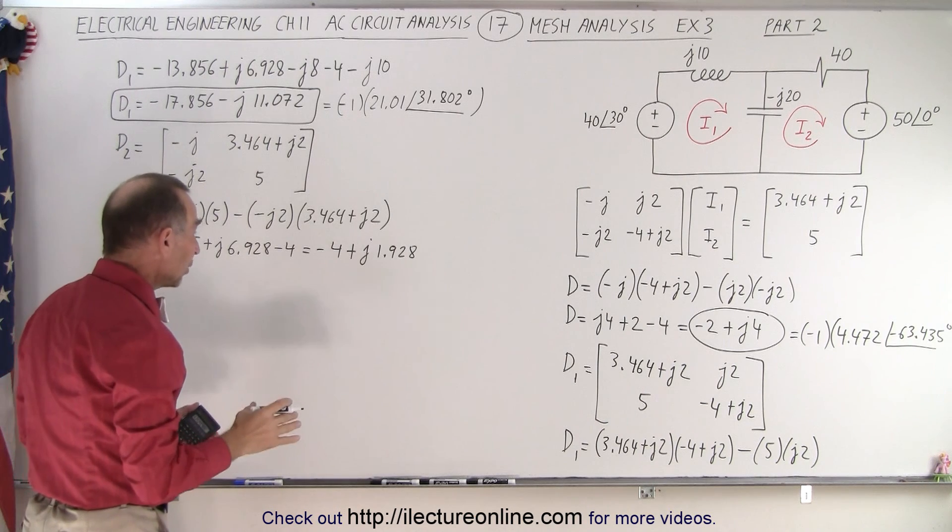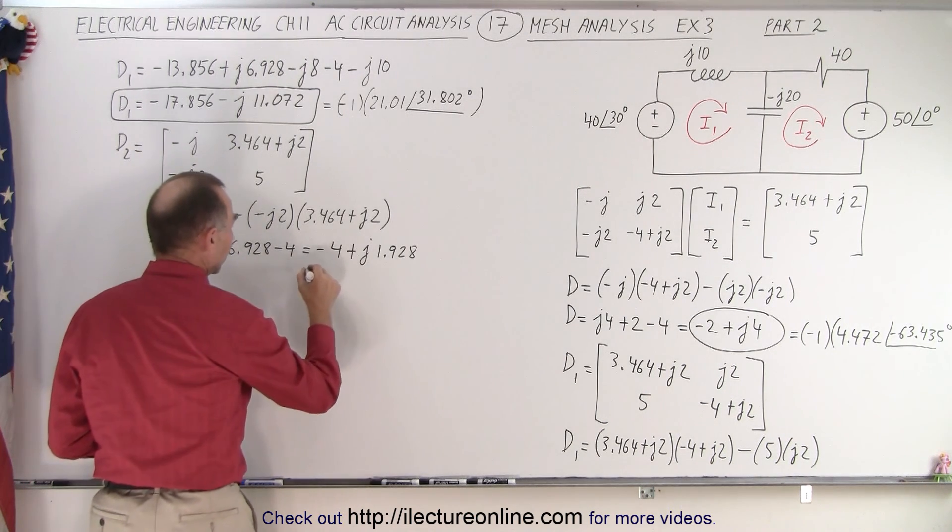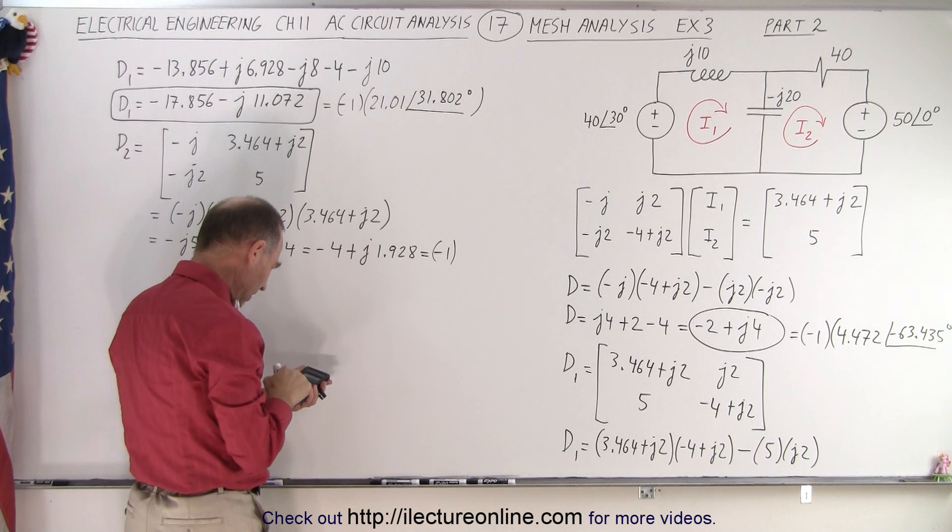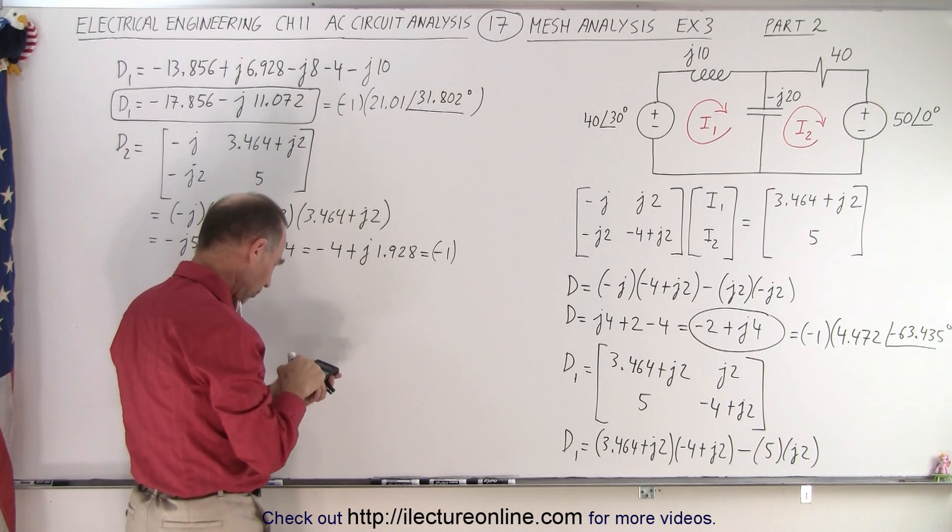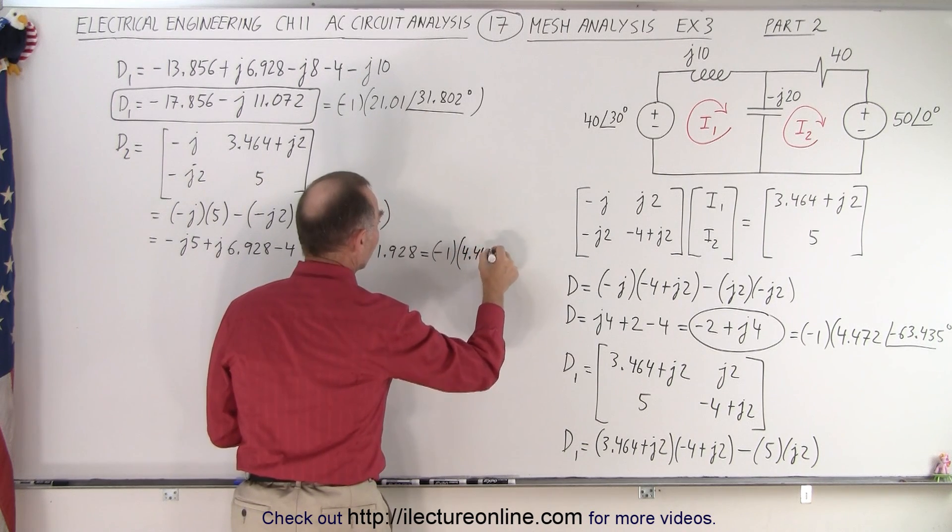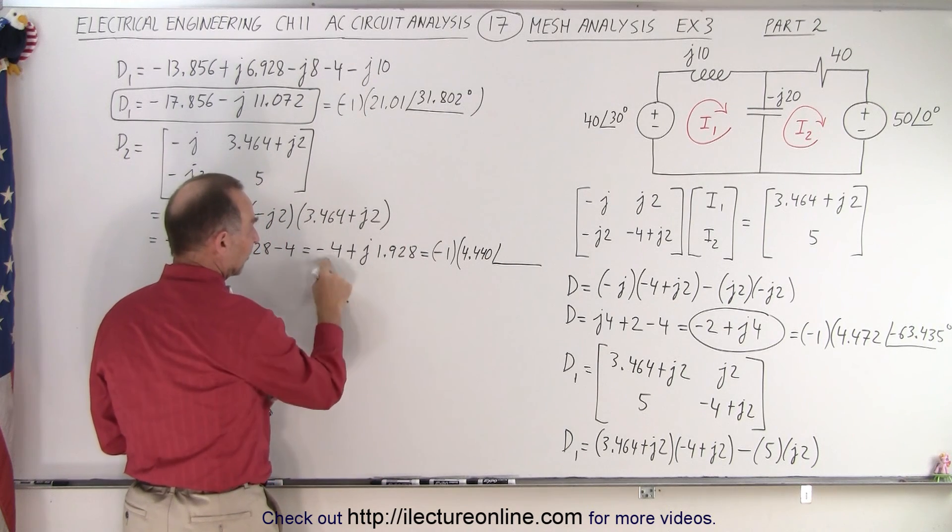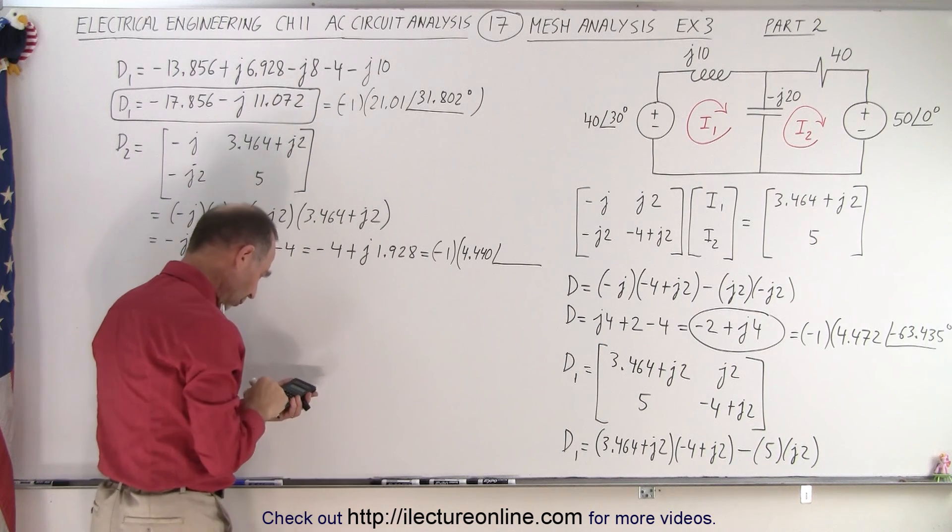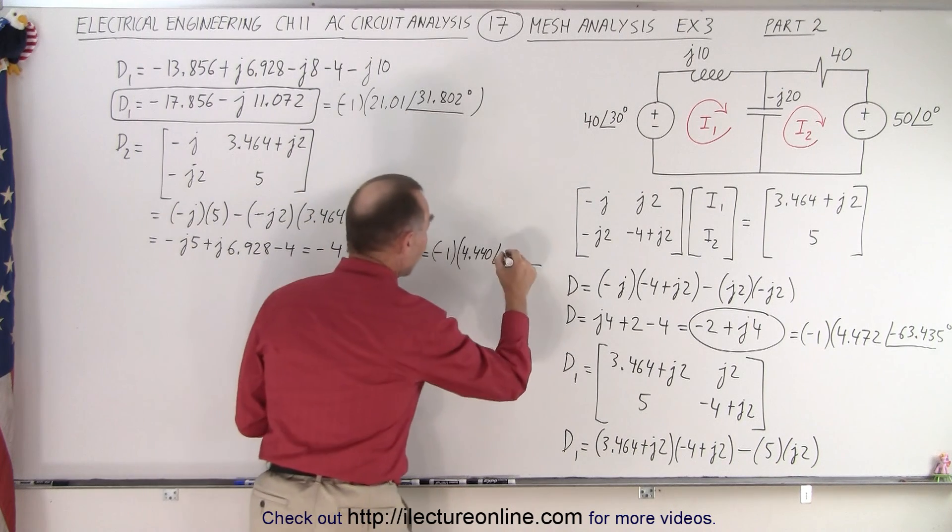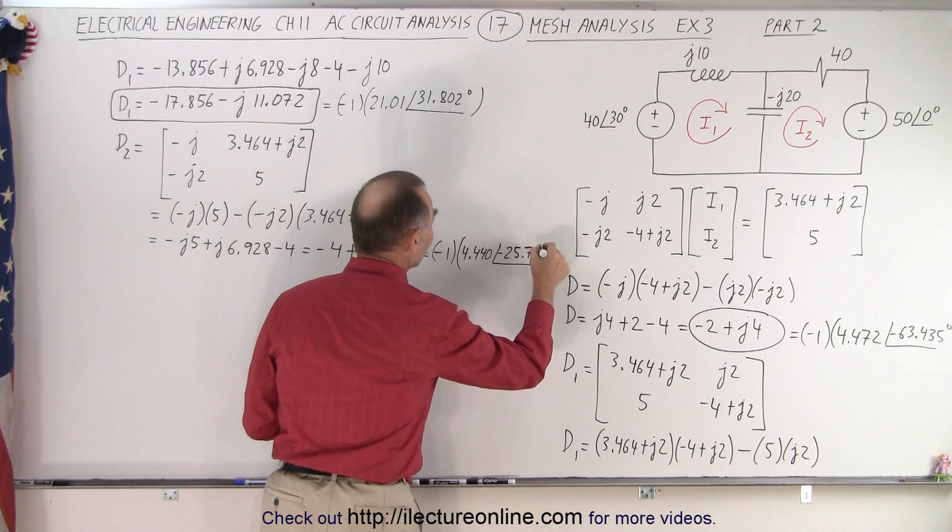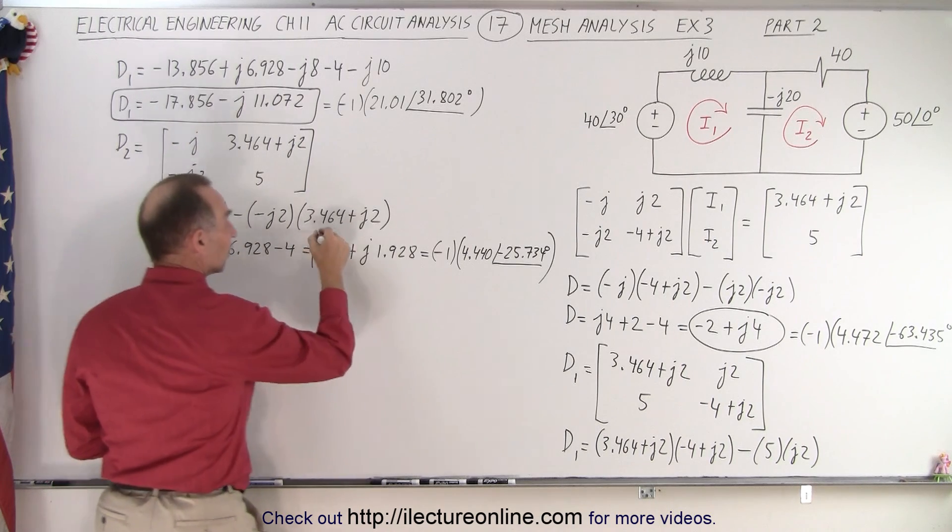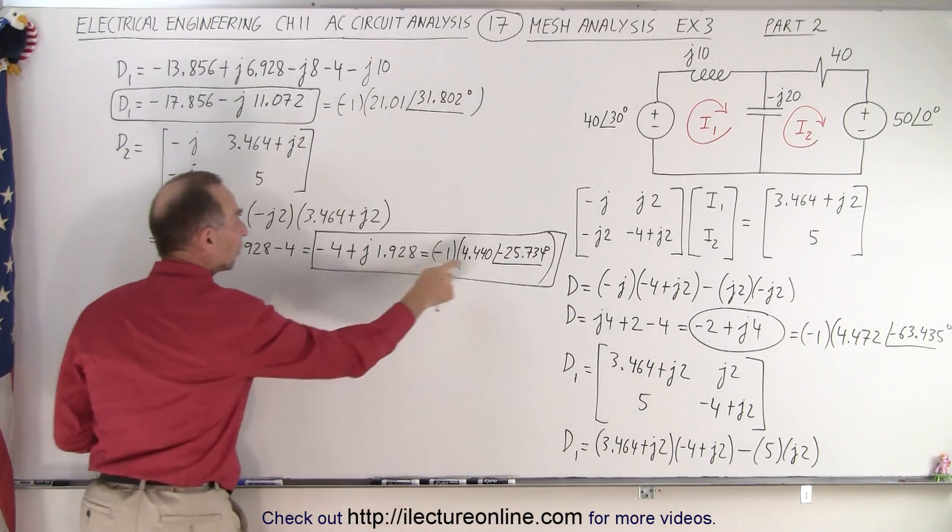And if I'm going to write that as a magnitude phase angle format, so this becomes equal to, I'm pulling out the negative 1. Now, the magnitude would be 16 plus 1.928 squared. Take the square root, it's 4.440, with a phase angle of, now remember, I took out the negative sign, so this is negative, this is positive, we end up with a negative angle. So 1.928 divided by 4, and the phase angle of that would be minus 25.734 degrees. So now we also have D2 in terms of the real imaginary part, or the magnitude and phase angle format.